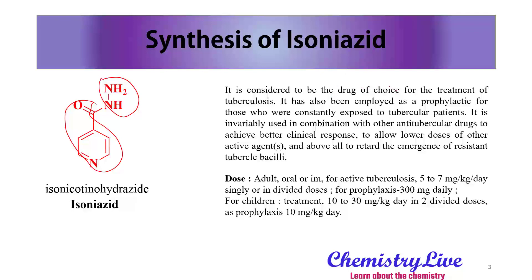Isoniazide is considered the drug of choice for the treatment of tuberculosis. It is also employed prophylactically for those constantly exposed to tubercular patients. It is invariably used in combination with other anti-tuberculosis drugs to achieve better clinical response, allow lower doses of active agents, and above all, retard the emergence of resistance in tubercle bacilli.